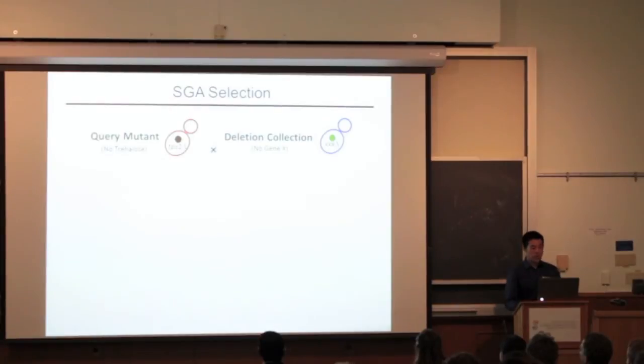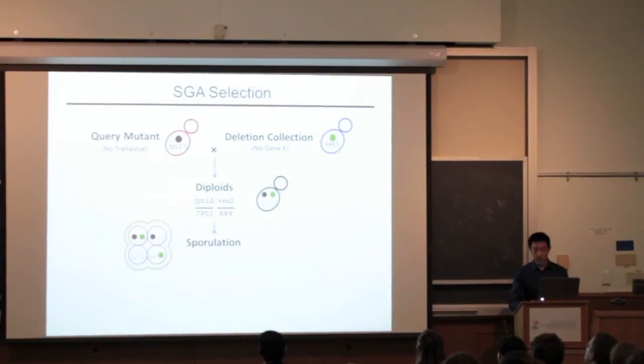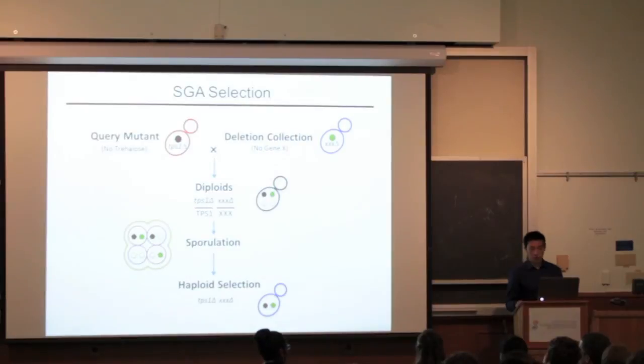Just like in dogs, we start out with the no trehalose mutant, and I want to mate that parent with the rest of the 4,700 mutants that yeast has one by one. We let the yeast mate, have offspring, and then choose through a series of selections the strain with both mutations.